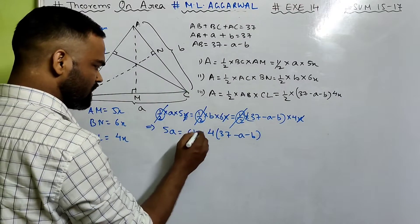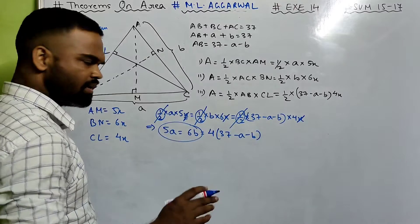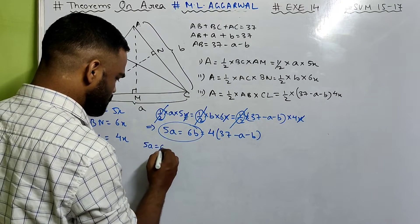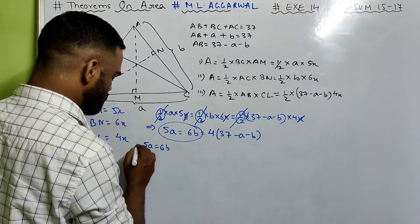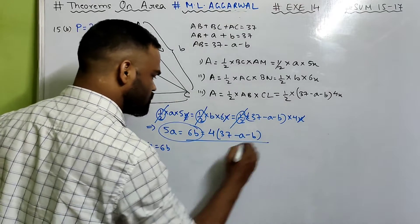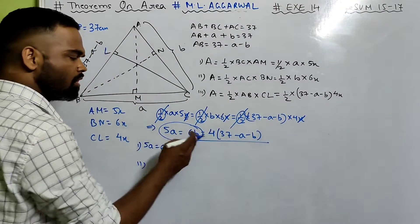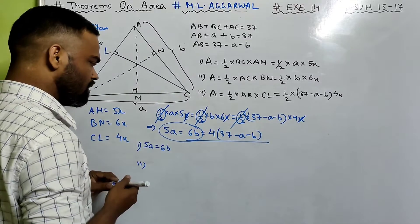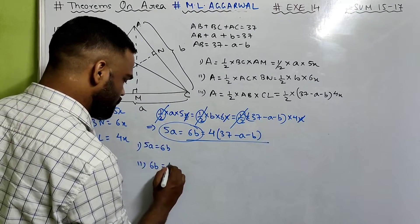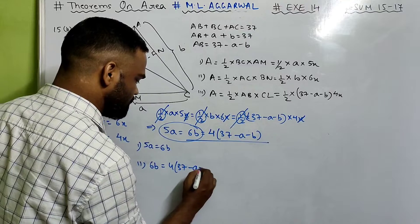From this we can say 5a equals 6b — that is your first relation. Now equating the second and third expressions: 6b equals 4 times (37 minus a minus b).